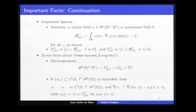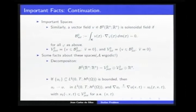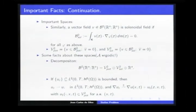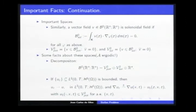Another interesting property of this space using the orthogonal decomposition is that if you have a bounded sequence in this space, then, up to a subsequence, u-epsilon converges to a function in this space. Each gradient bounded in the norm L2 has a two-scale limit. Due to this decomposition, we can decompose the two-scale limit as a sum of the gradient of this limit with a vector field that is potential.